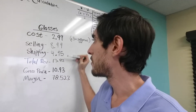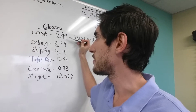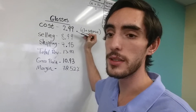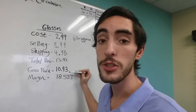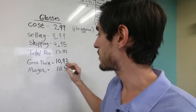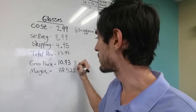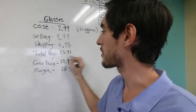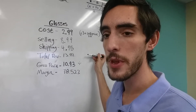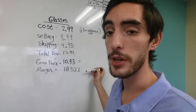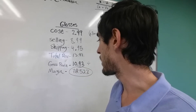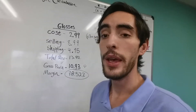Now to get your gross profit — how much are you actually profiting — you take $13.92 minus $2.99, so you take your total revenue minus your cost, which equals your gross profit. Then to find your margin, you take $10.93 divided by $13.92, and you get 78.52%, so your margin is 78.52%.